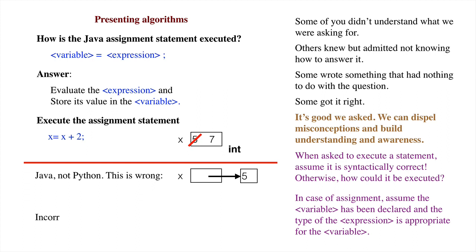It's wrong to draw another box named x with the value 7 in it. There is only one box x, and its value is changed. Drawing another box will lead to misconceptions about how the assignment statement is executed, and it may result in your making errors when trying to figure out how to write or debug a particular program.